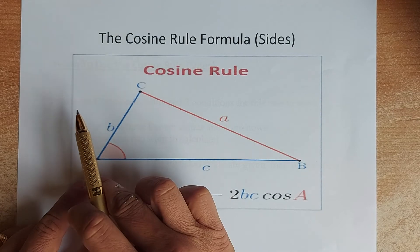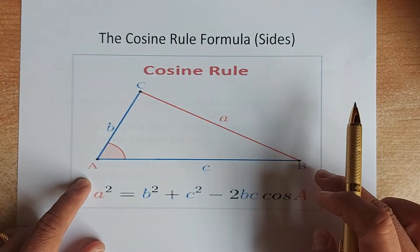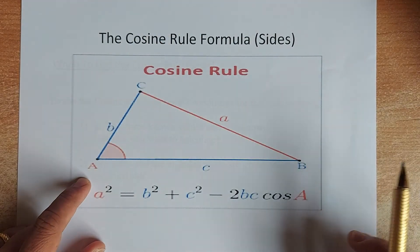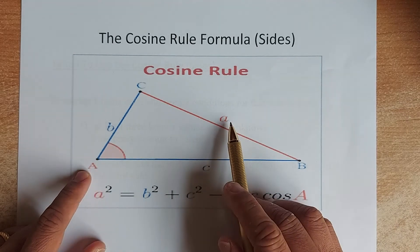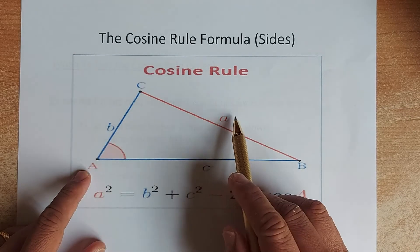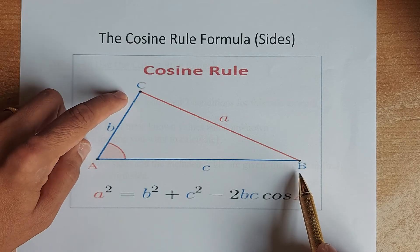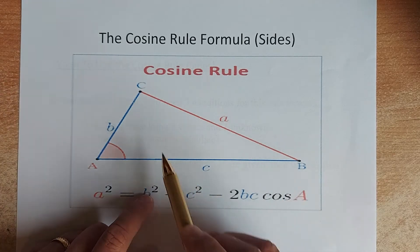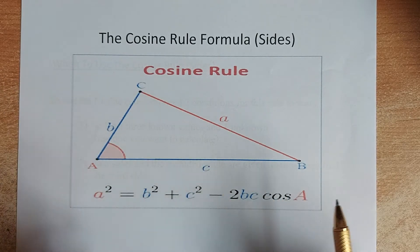The angles are represented by the uppercase A, B and C. And the opposite sides, opposite of A is little a, opposite of B is lowercase b, and opposite of C is the lowercase c.